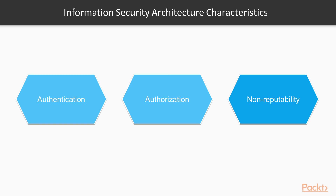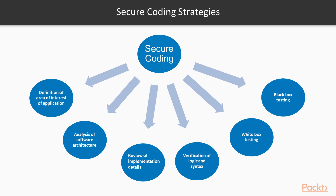Secure coding is the practice of software development that guards programs against security vulnerabilities and makes it resistant to malicious attacks right from program design to implementation. The first strategy is definition of areas of interest — identifying important assets in code and data of the application which are critical and need to be secured.